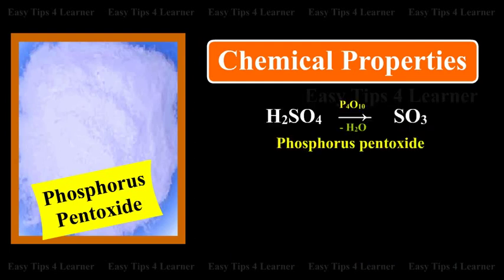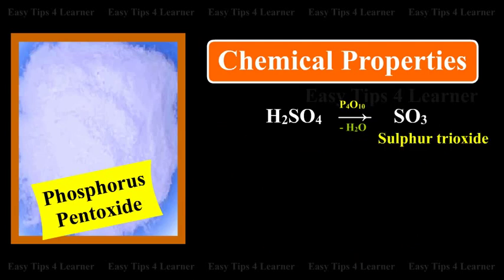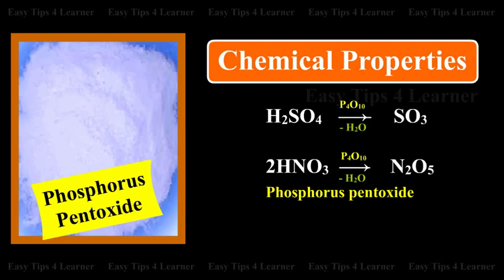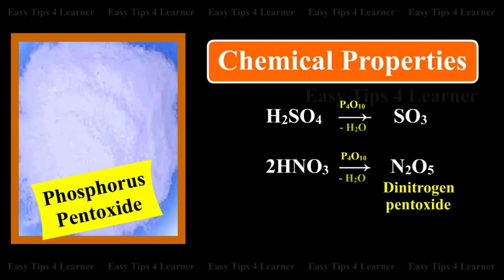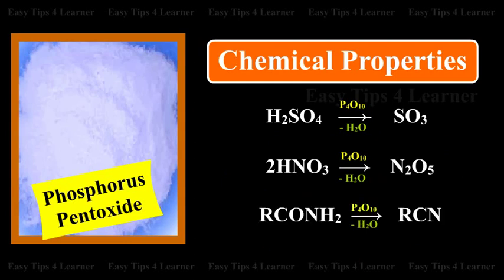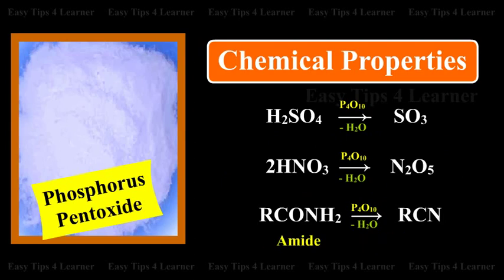Phosphorus pentoxide dehydrates sulfuric acid to sulfur trioxide, nitric acid to dinitrogen pentoxide, and amide to nitrile. It is used as a dehydrating agent.